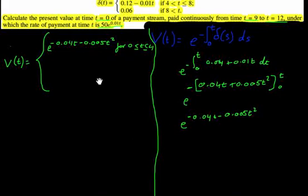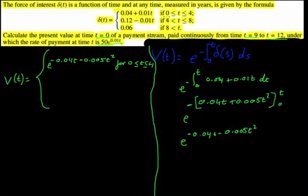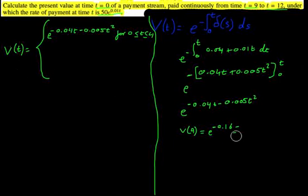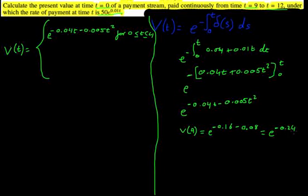Now, in order to find the next piece, we need v(4). If we just integrated the next δ(t) function from 4 to t without multiplying by v(4), we'd only be discounting back to time 4, not time 0. So we need to compute v(4) by substituting t equals 4: e to the negative 0.04 times 4 minus 0.005 times 16, which is e to the negative 0.24.